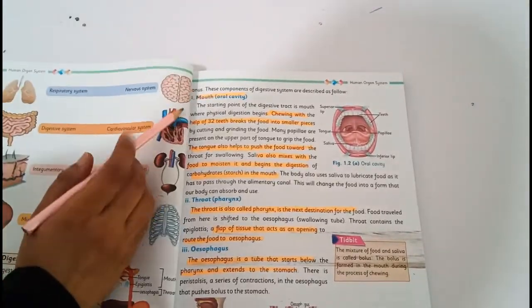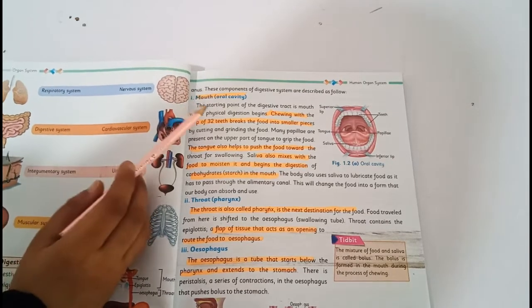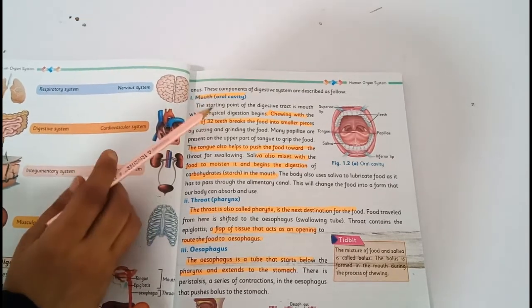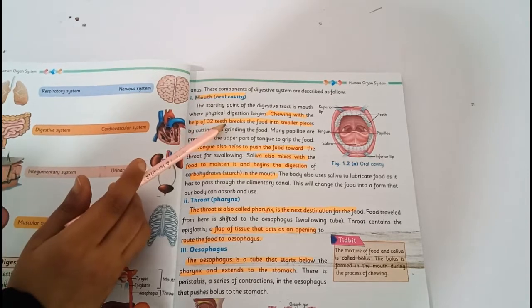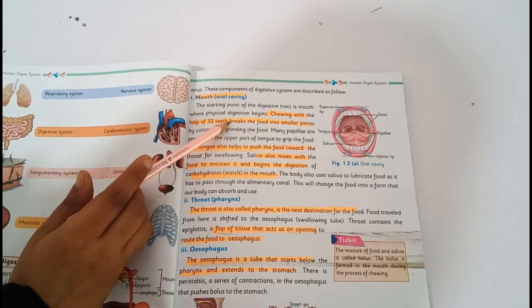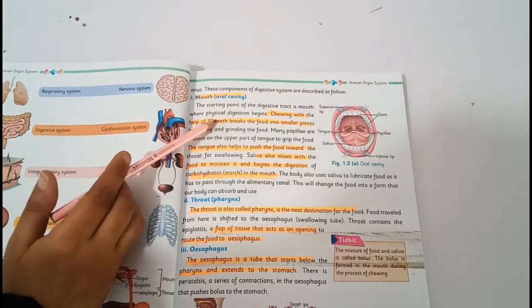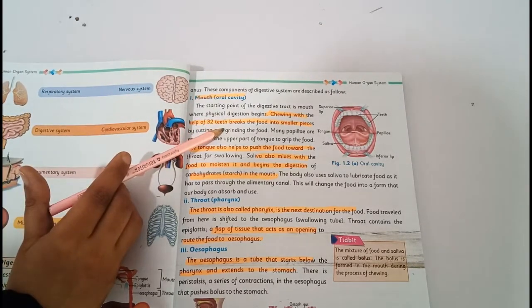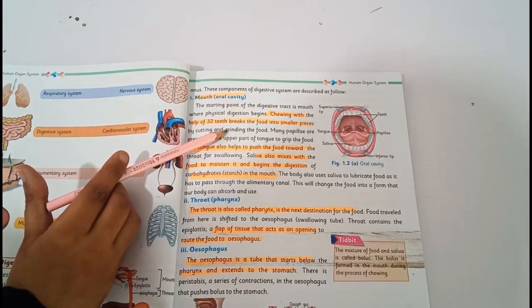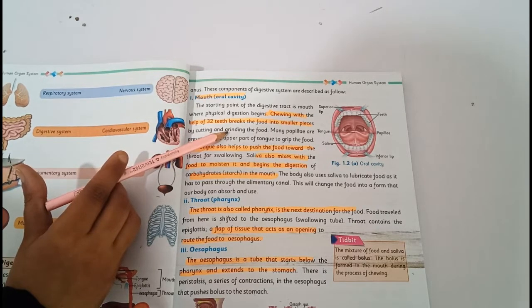First we discuss the mouth. Mouth is also called oral cavity. The starting point of the digestive tract is mouth where physical digestion begins. Here physically our food is digested.